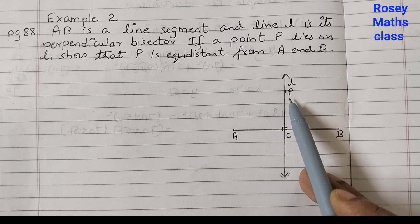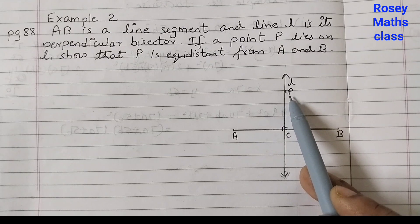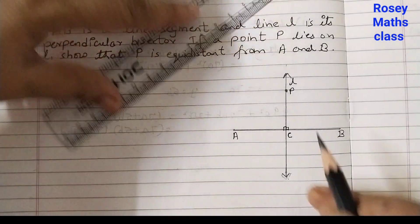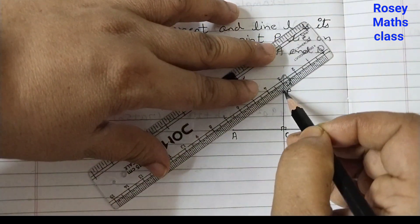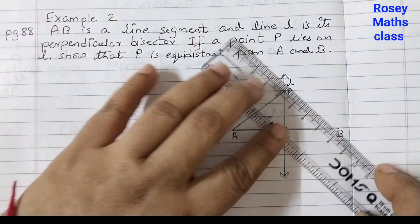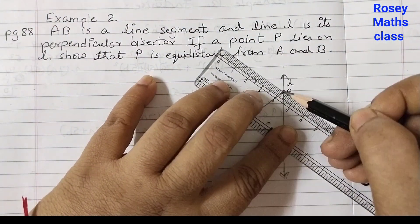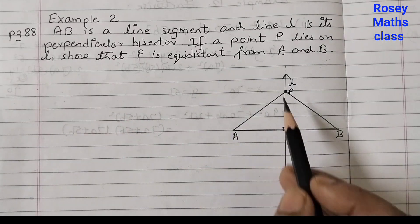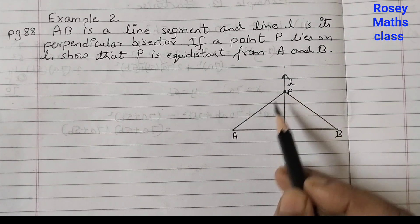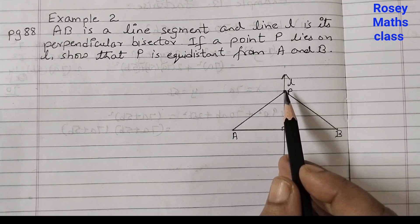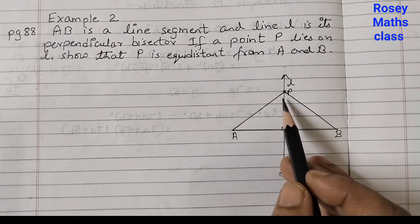So PA and this is PB. We need to prove that P is at equal distance from A and B which means we need to prove that PA is equal to PB.